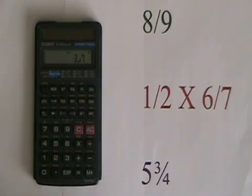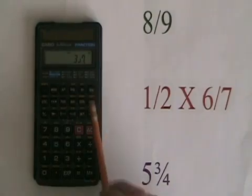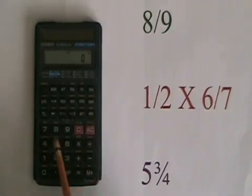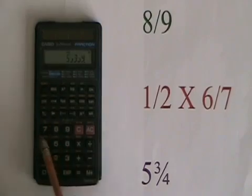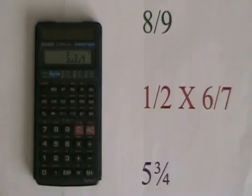If we need to enter a mixed number, like 5 and 3 quarters, we press 5, ABC, 3, ABC again, 4. And this is what a mixed number looks like in this calculator.